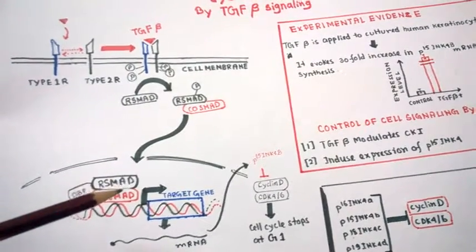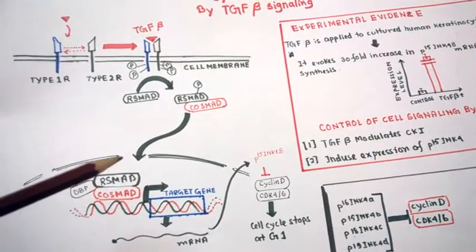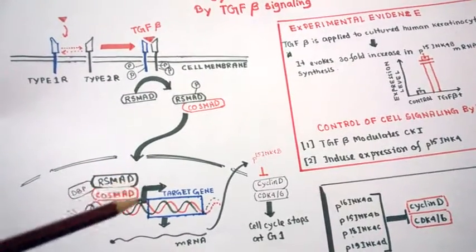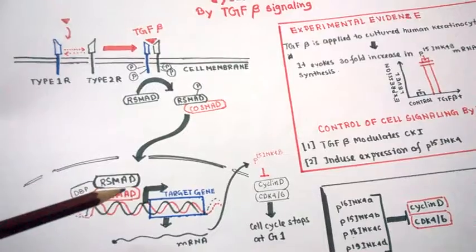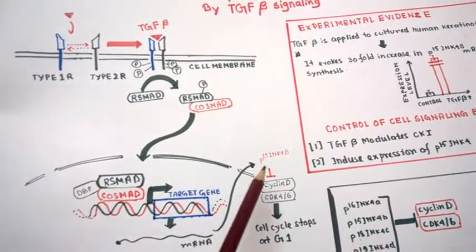CKIs, that means cyclin dependent kinase inhibitors. TGF beta signaling will ultimately give rise to higher levels of cyclin dependent kinase inhibitors. For instance, here I have shown P15.